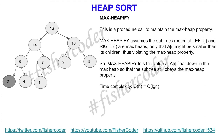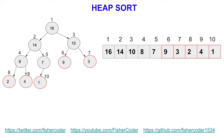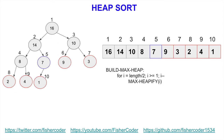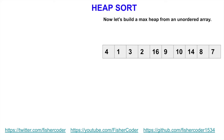Now let's look at the example from earlier. We're given this randomly ordered array. All of the elements in the second half of this array are leaves in the heap. To implement build max heap, we go from the last element of the first half all the way to the first element, calling max heapify along the way. So we call max heapify on 7, then 8, then 10, then 14, then 16. After processing the first half, we have built a max heap.